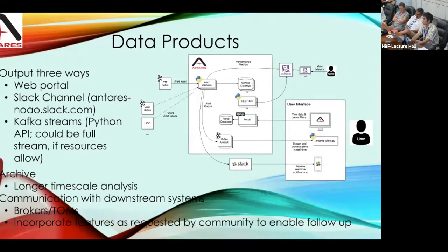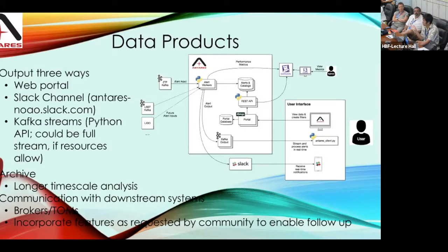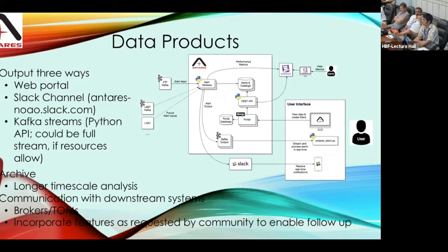To summarize: ANTARES is an open project — everyone can request access. If you are interested in follow-up with the Zwicky Transient Facility, it covers the northern sky down to -30 degrees declination, giving some overlap with the southern sky. We have different output channels: a web portal where you can browse alerts, a Slack channel for real-time notifications, and a Python-based API to download alerts of interest and perform more sophisticated analysis.